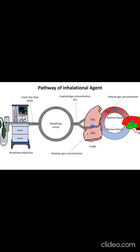The final concentration of anesthetics in the brain is the result of the anesthetic concentration in fresh gas flow, inspired gas, alveolar gas, and arterial gas. These four gas concentrations determine the uptake and distribution of anesthetics to the brain and other tissues.